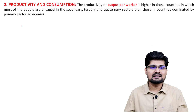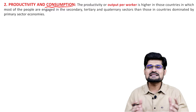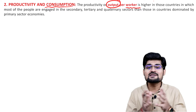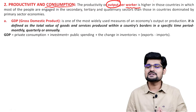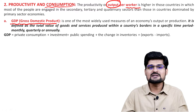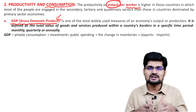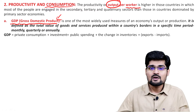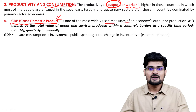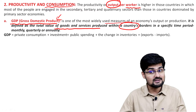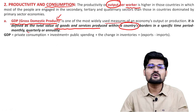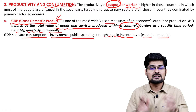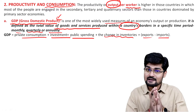The second important economic indicator is productivity and consumption. Output per worker is higher in countries where secondary, tertiary, and quaternary sectors are more developed than just primary sectors. GDP is a major indicator of a country's economic development — not overall development. GDP is defined as the total value of goods and services produced within a country's borders in a specific time period: private consumption plus investment plus public expenditure plus change in inventories plus exports minus imports.